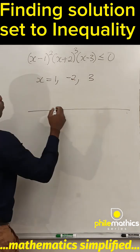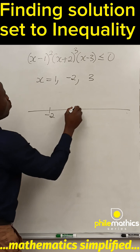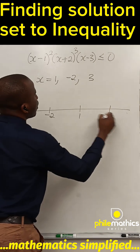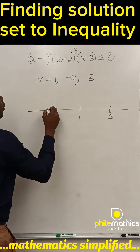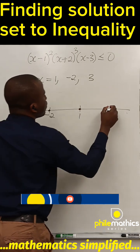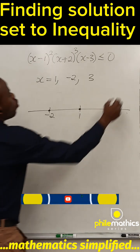So if we draw the number line, we'll have -2, 1, 3. Because it's less than or equal to, the points are part of it. So we start from the top right.